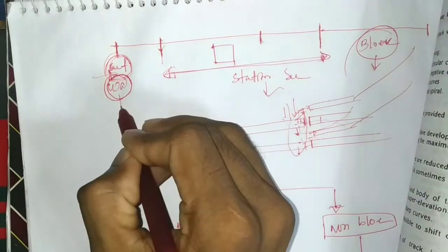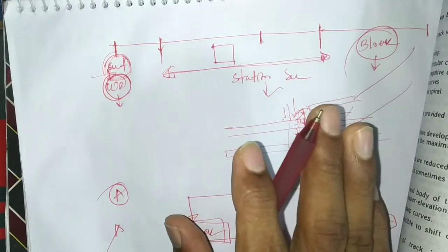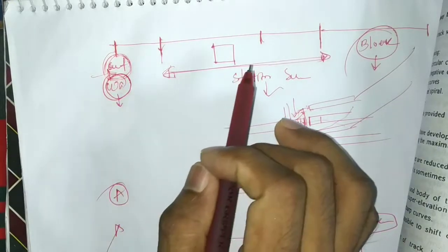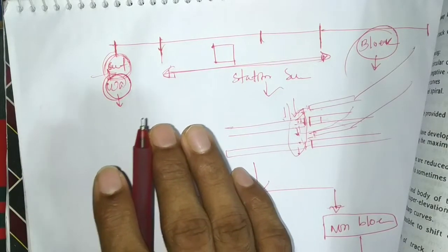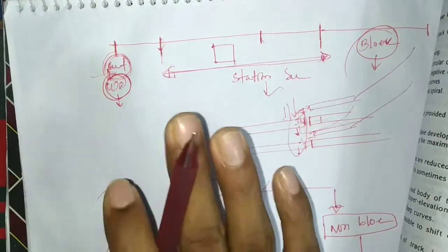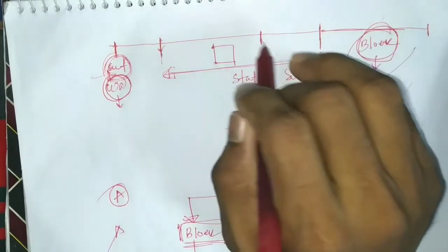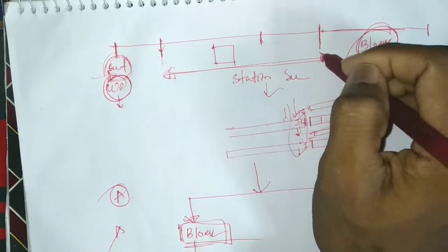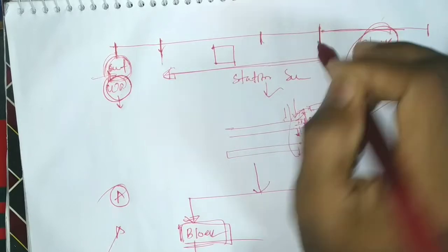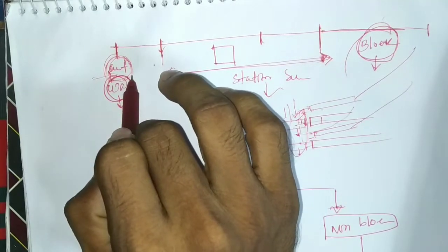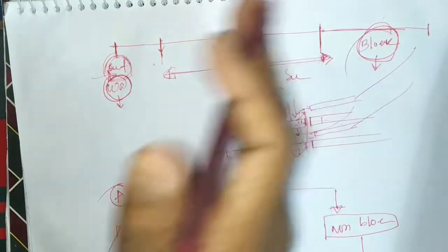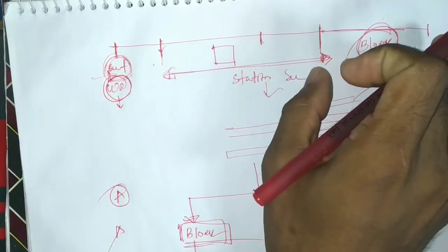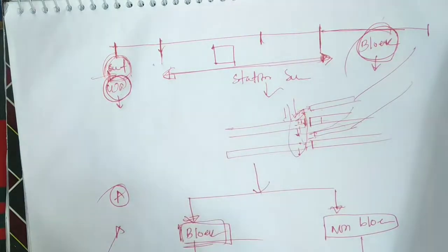We will talk about the inner signal. The main important thing is the external signal. The A-class station will be at the center. The home signal or the outer signal can be seen from the block section or the station section. This is the station section where you can see the signal.